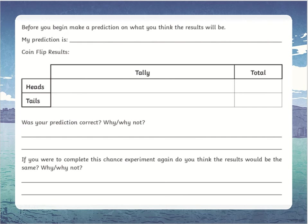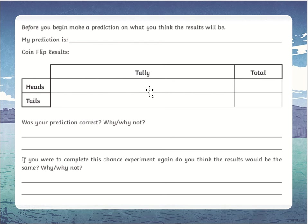Before you begin, you're going to make a prediction. What do you think the results are going to be? Do you think there'll be more heads? Do you think there'll be more tails? Then flip the coin and put in tally marks — how many times did it land on heads, how many times on tails? Make sure you do that a total of twelve times, then tally and total it up.